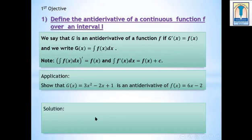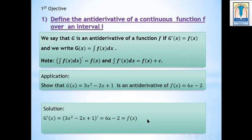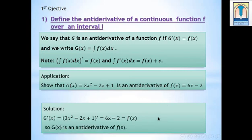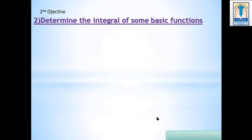Note: the derivative of the integral of f(x) dx is equal to f(x), and the integral of f prime(x) dx is equal to f(x) plus c. Application: Show that g(x) is an antiderivative of f(x). You must apply the rule g prime(x) = f(x). Solution: g prime(x) equals 6x minus 2, which is f(x). So g is an antiderivative of f.